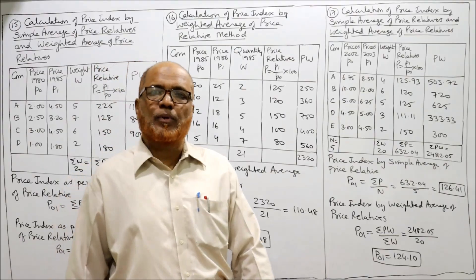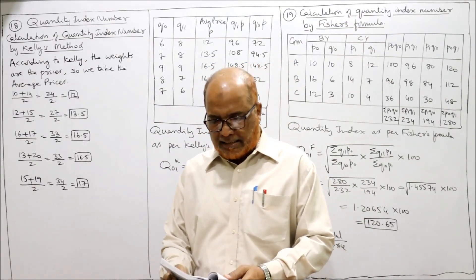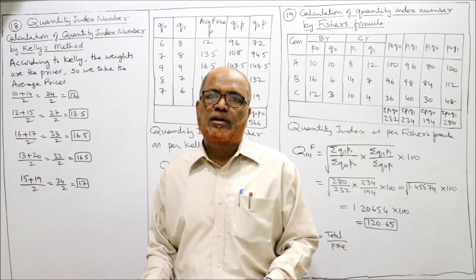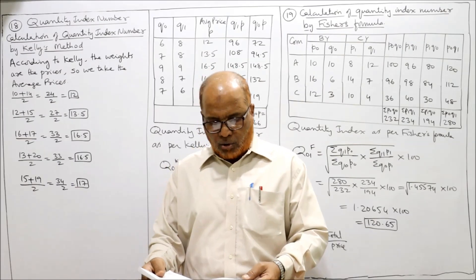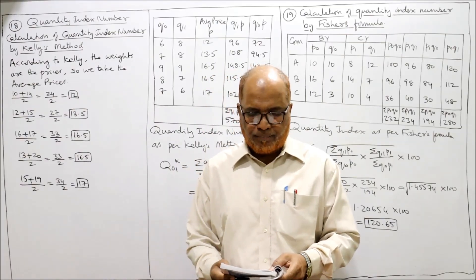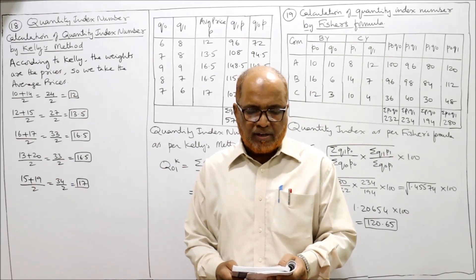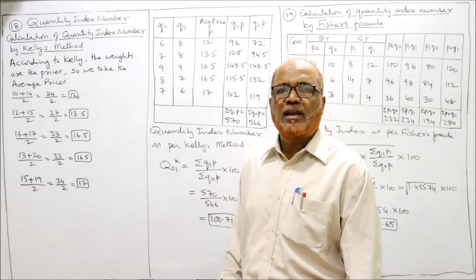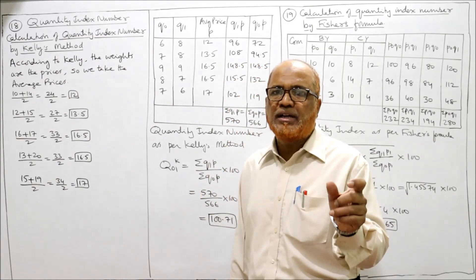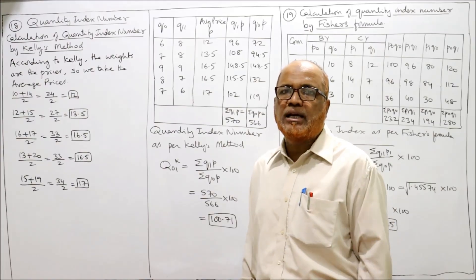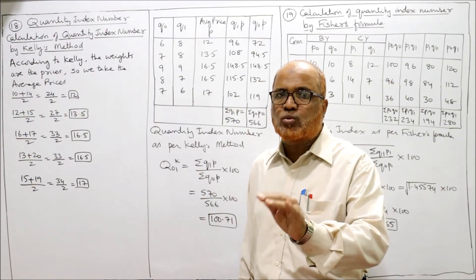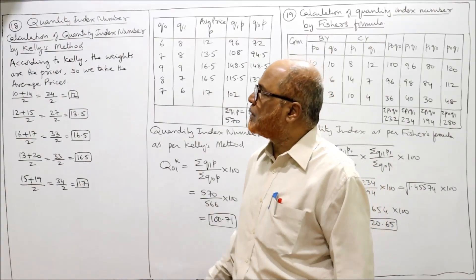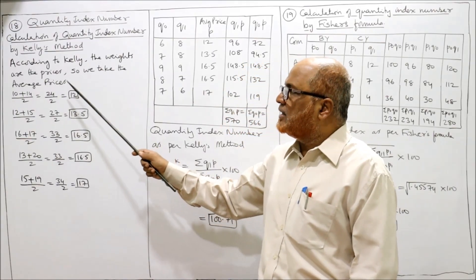We have completed 17 problems. Now problem number 18: calculate quantity index — the first time we are going to calculate quantity index; so far we have calculated price index. We calculate quantity index from the following data as per Kelly's method. Values P0, Q0, P1, Q1 are given. For Kelly's method we require the average price, since price is taken as weight when calculating quantity index. Because both base year price and current year price are given separately, we calculate the average price.